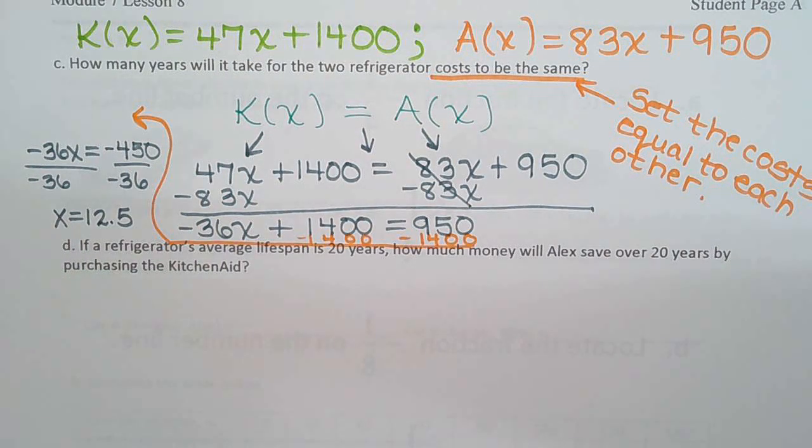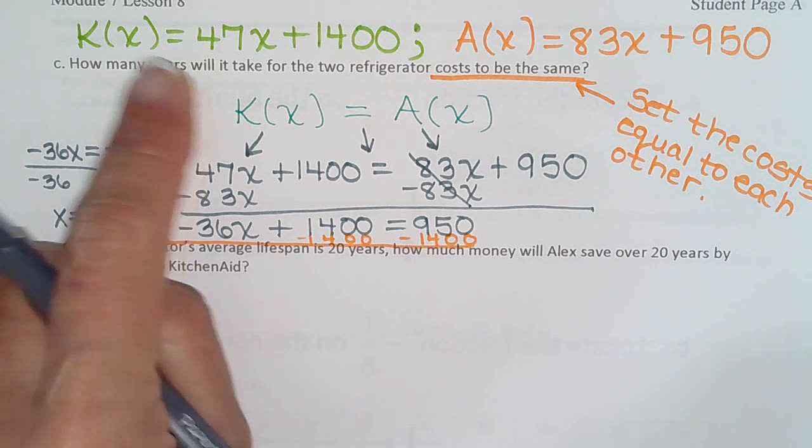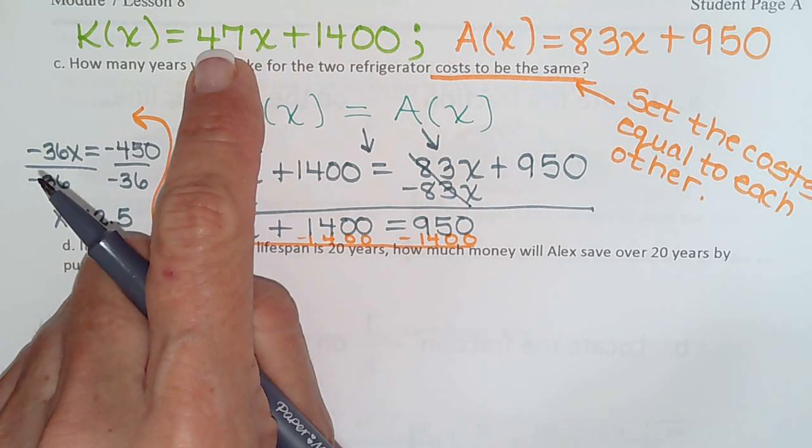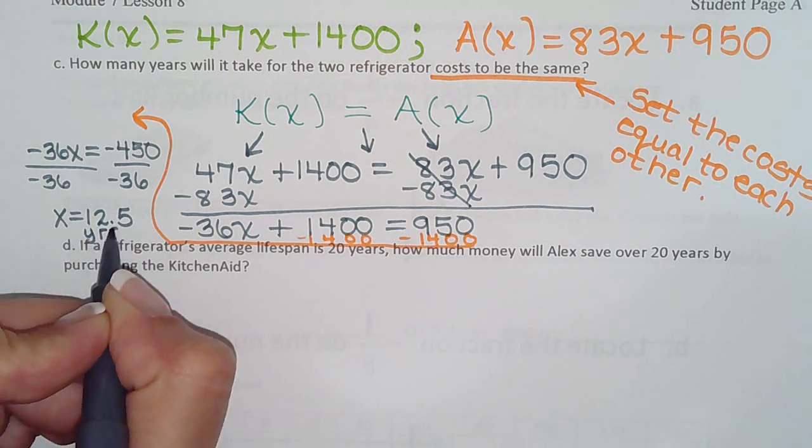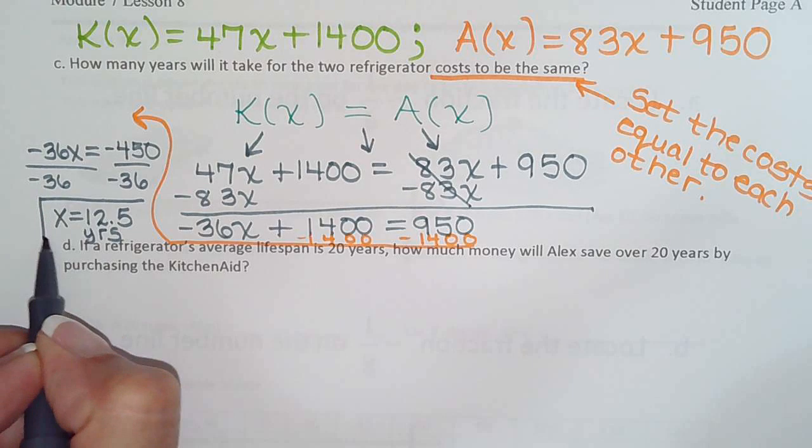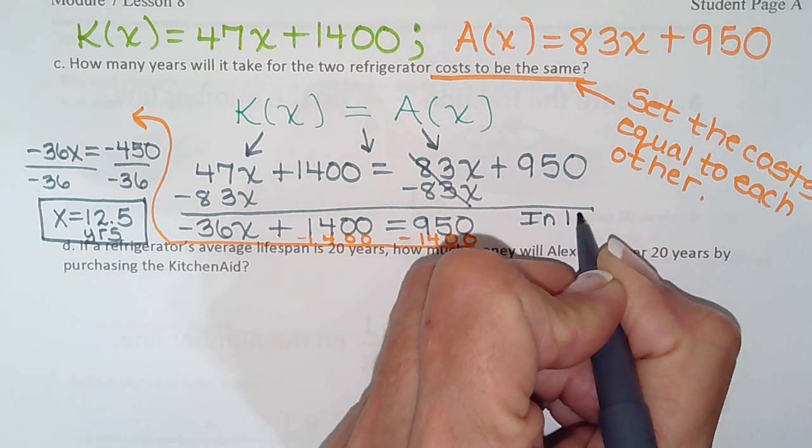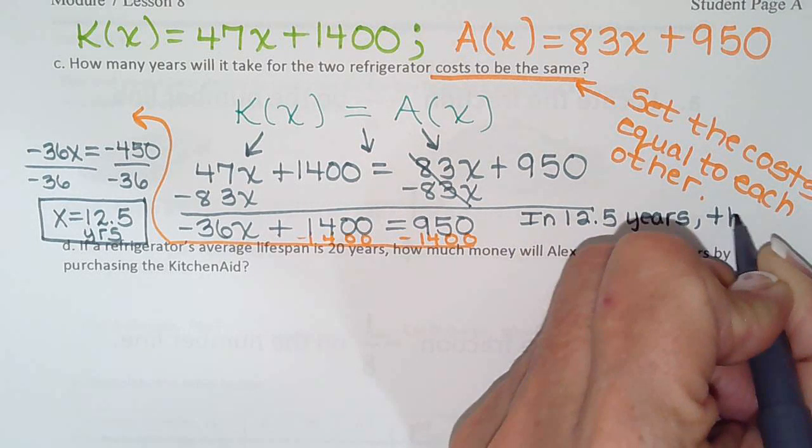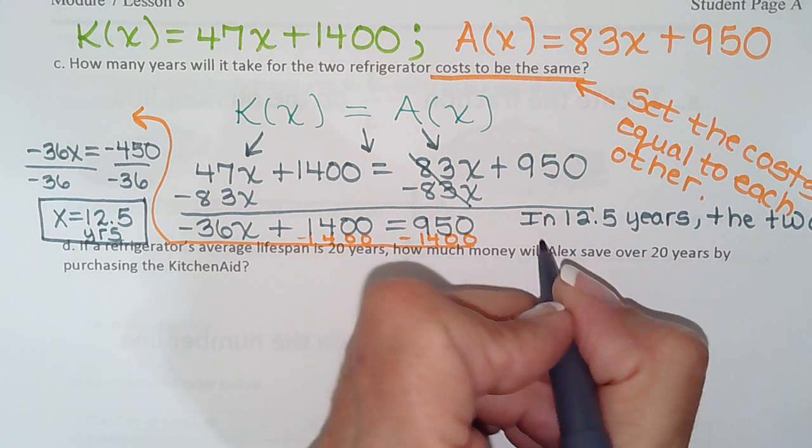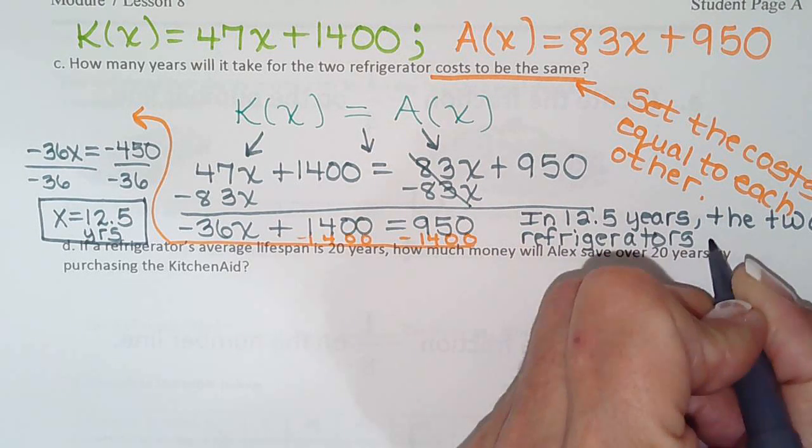So let's see if we've answered the question. How many years? Is years X? $47 times the number of years. Yep, we found X. So that means in 12.5 years, the two refrigerators will cost the same. So let's write that here. In 12.5 years, the two refrigerators will cost the same.